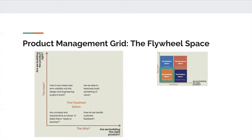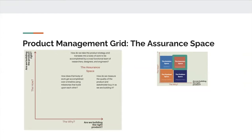Like a flywheel that might need a few initial turns before gaining momentum, any product team coming together for the first time needs to establish the rigor of execution before scaling to deliver meaningful outcomes. You're grappling with questions like: how do we create visibility into the design and engineering scope of work? How can we iteratively build the product? How do we handle additional feedback coming from customers? The assurance space integrates the problem defined in the product strategy with the process to build the solution. The intent is to assess progress for building a quality product experience — how is work accomplished over timelines and milestones, and how do we measure the quality of the product and stakeholders' buy-in as we build the product?